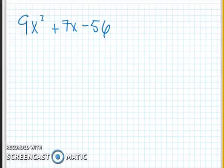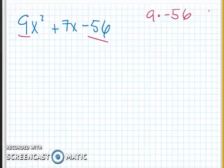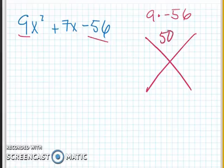All right. Here's our last one. We got 9 times 56. So we're going to multiply those together. 9 times -56. That's a pretty big number. I got my calculator out on these big ones. And we get 504, negative. And we got a positive 7 we're trying to get.